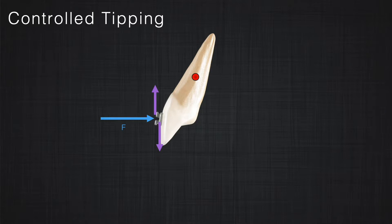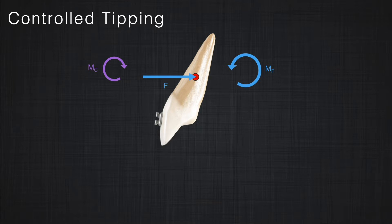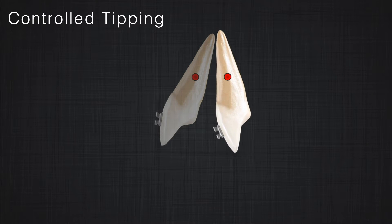What happens if the magnitude of the moment that the couple produces is less than the moment that the force produces? We apply a couple but slightly less, with the same force magnitude. In the equivalent system, we transfer the force to the center of resistance and draw the moment of the force — unchanged from the previous example — but the moment of the couple is a little bit less. The moment of the couple partially reduces the moment of the force, leaving a small remaining moment in the same direction as the moment of the force — counterclockwise — plus the force causing translation.